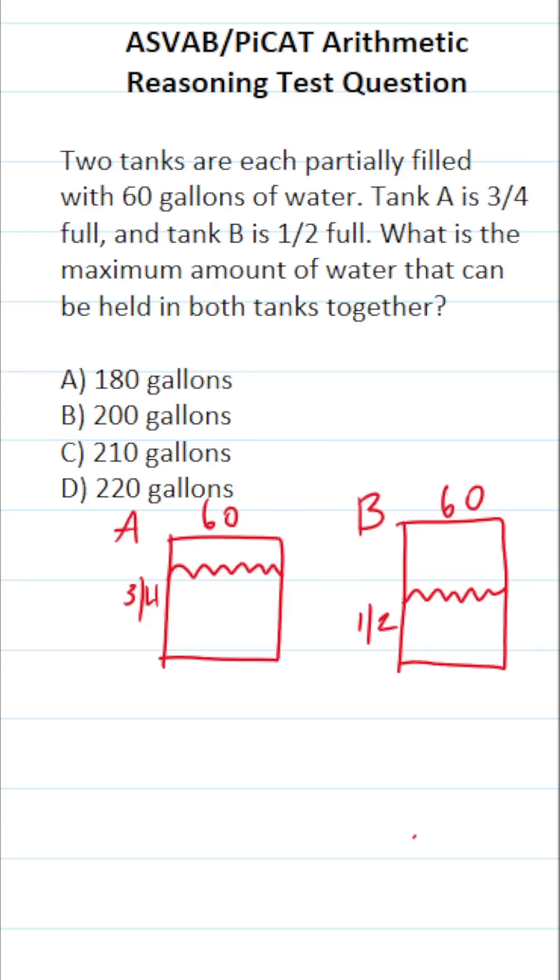So what we're going to do is write an equation and then solve it such that we find the maximum capacity of both tanks together. Let's start with tank A. The equation I'm going to write: 60 gallons is equal to three-fourths of the maximum capacity of tank A. So that's going to be three-fourths times X, where X refers to the maximum capacity of tank A.